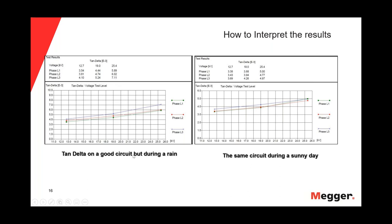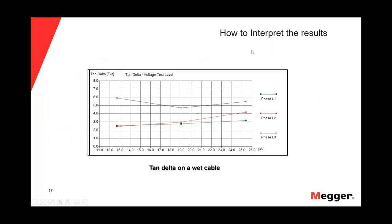How to interpret results with a wet cable: phase one is green, phase two is red, phase three is blue — same scale of Tan Delta and voltage. When the cable is wet, you can see that phase three initially starts high. Then as the voltage is applied and increased, you actually see a decrease, indicating that it is water. That's what this cable shows under an actual wet condition.